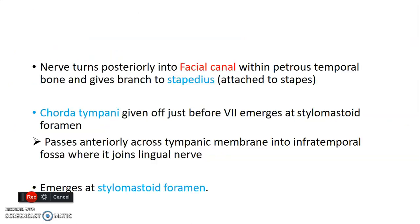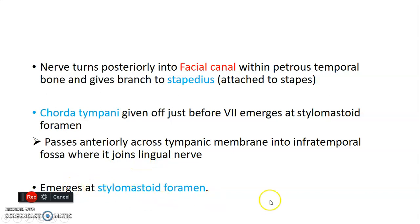After that, the nerve turns posteriorly into the facial canal within the petrous temporal bone. After turning posteriorly in the facial canal, it gives a branch to the stapedius muscle — a muscle attached to the stapes, which is an ossicle of the ear. Then the chorda tympani branch is given off just before the facial nerve exits through the stylomastoid foramen. It passes anteriorly and crosses the tympanic membrane into the infratemporal fossa, where it joins the lingual nerve.